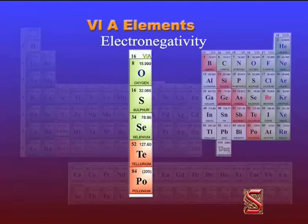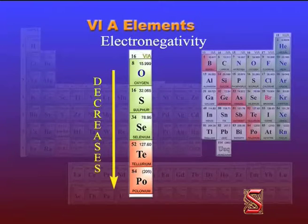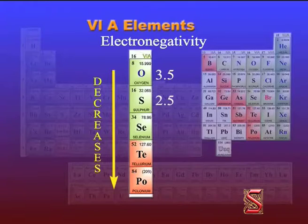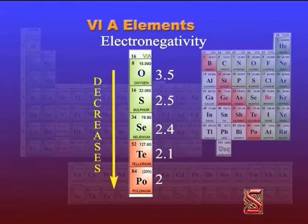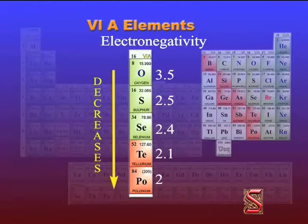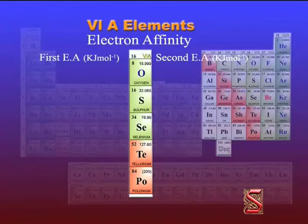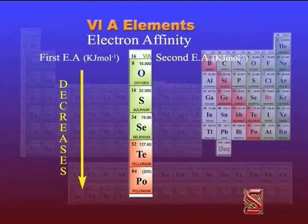Electronegativity gradually decreases from oxygen to polonium. The next property is electron affinity. The values of electron affinity also decrease from oxygen to polonium.